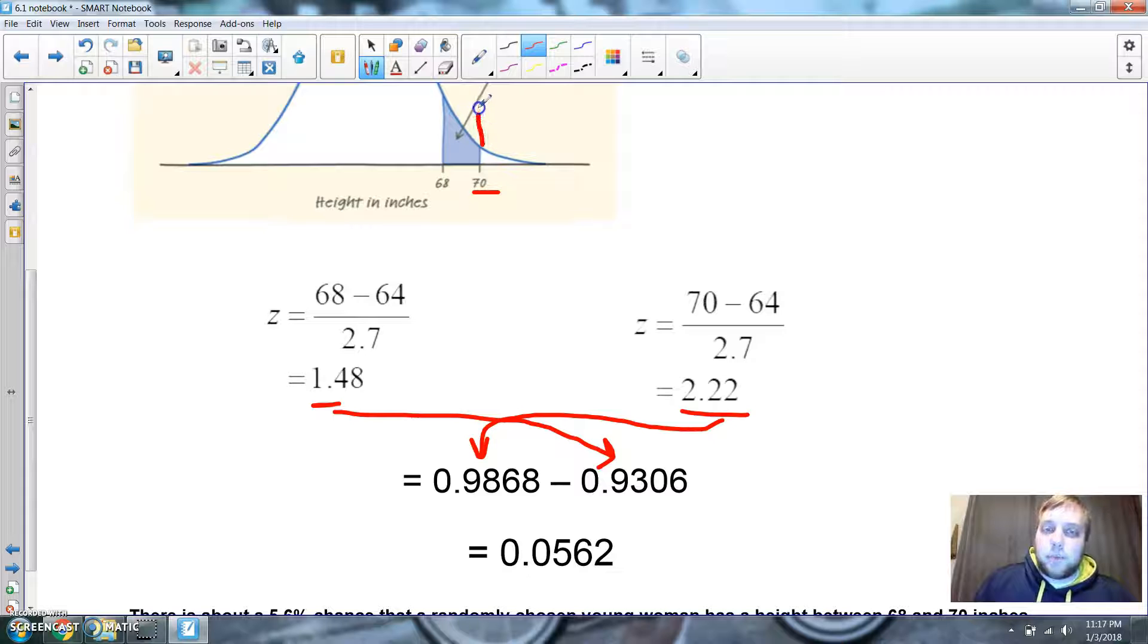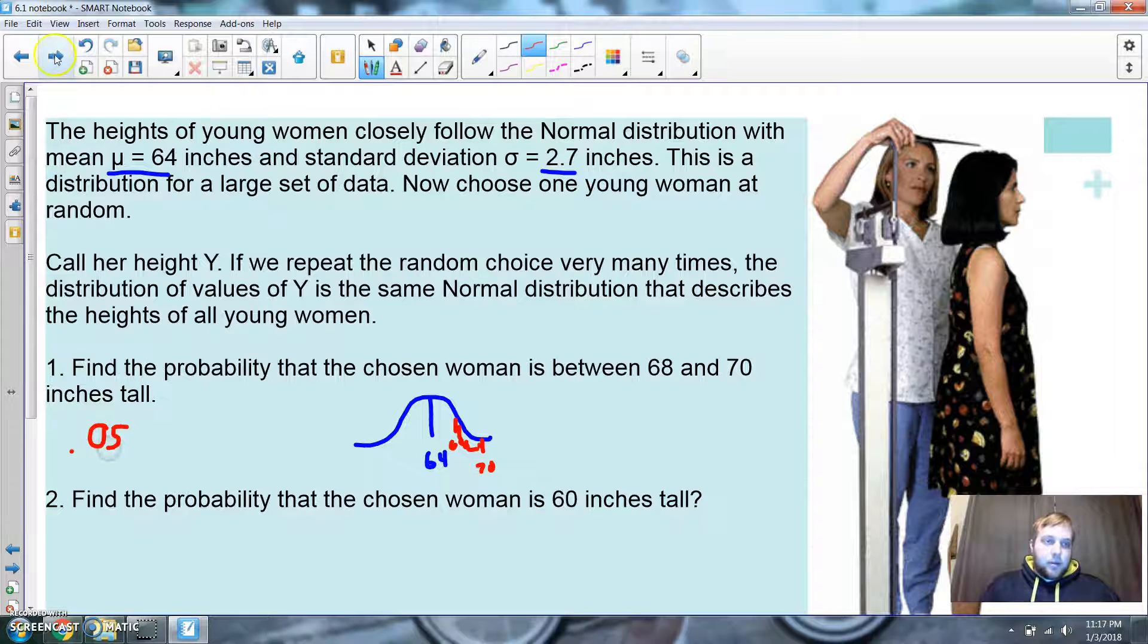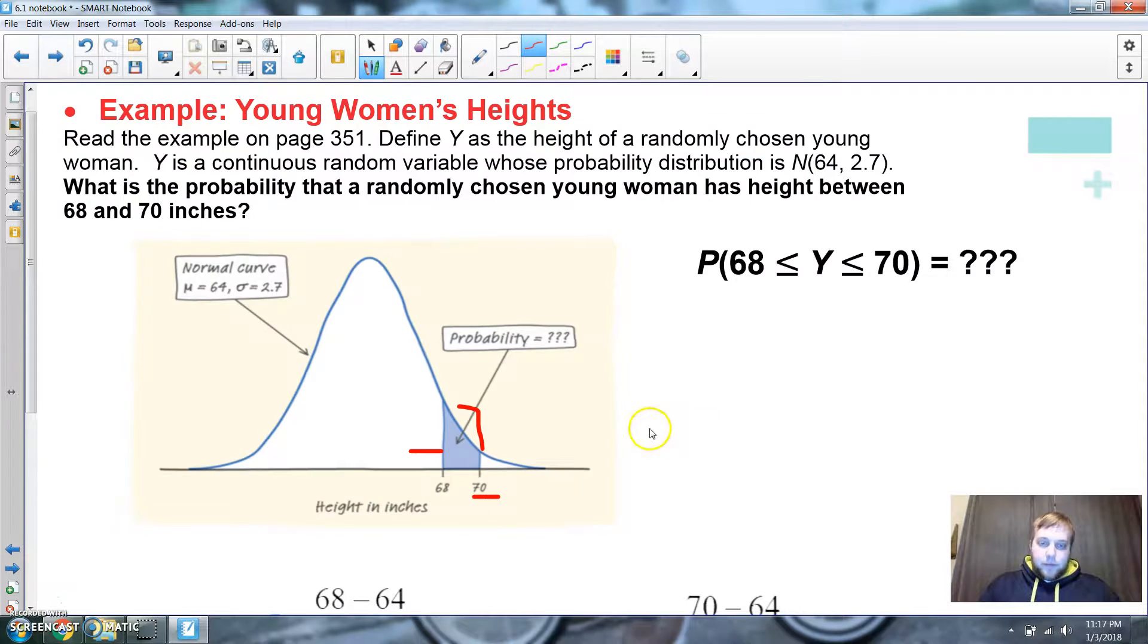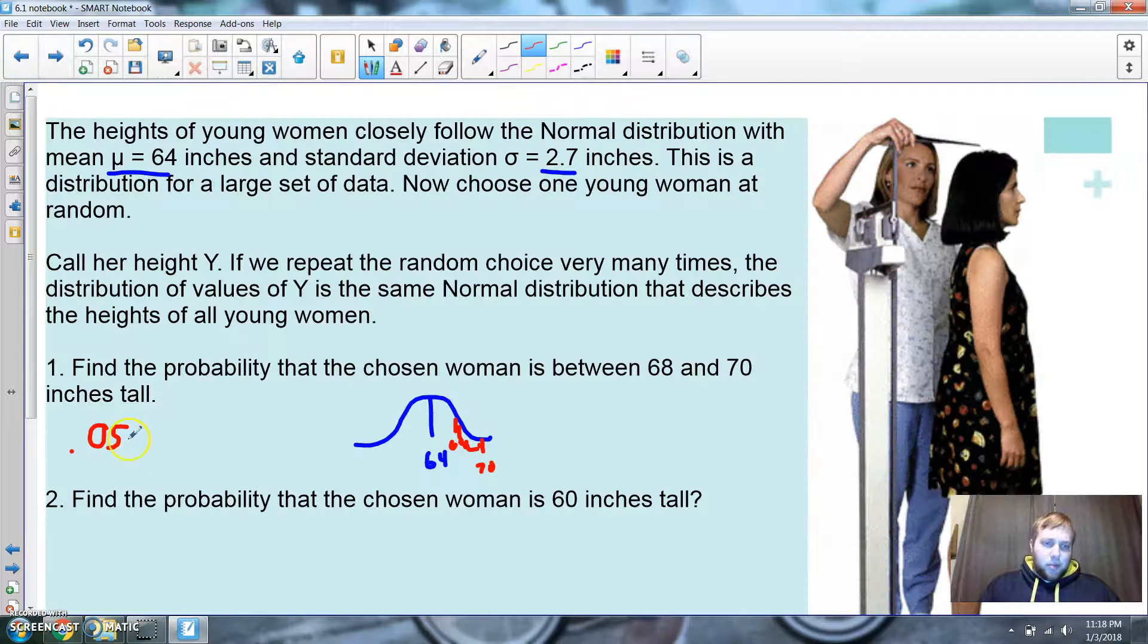So, how much area is below this point is 98. How much is below this guy? Well, 93. So, what's the area in between them? It would be about 5%. So, what's the probability of getting somebody? It would be 0.05. I forgot. 0.0562. 0.0562.